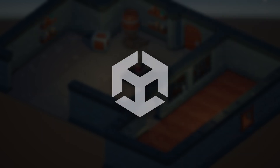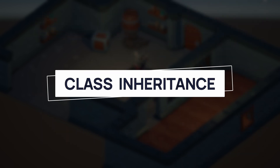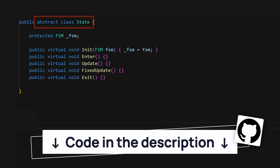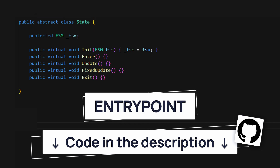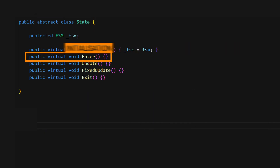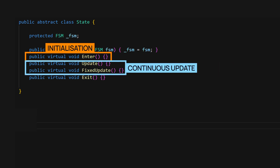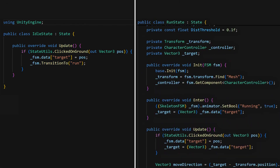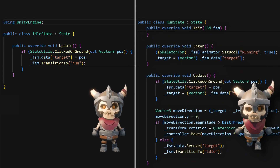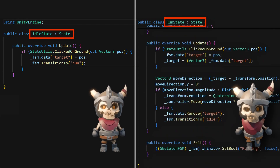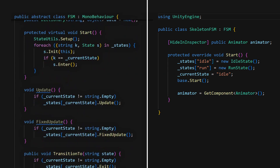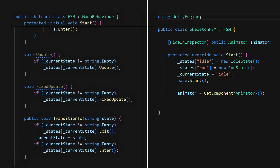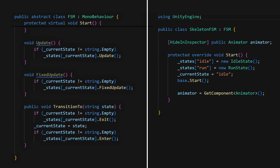To create an FSM in Unity, we usually rely on inheritance. We first make an abstract state class that defines the three main entry points that an AI state can need: the initialization upon state entry, the continuous update logic — optionally with a separate one for physics — and the cleanup upon state exit. Then we create our specific state classes for each behavior of our AI that derive from this state class. And finally, we code an FSM manager that takes care of executing the logic of the current state and transitioning between states when need be.